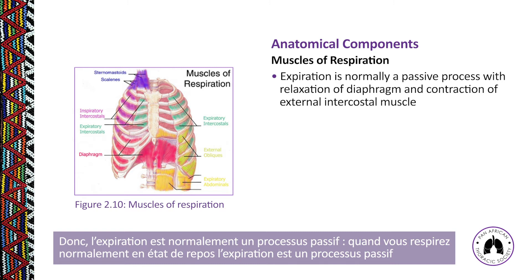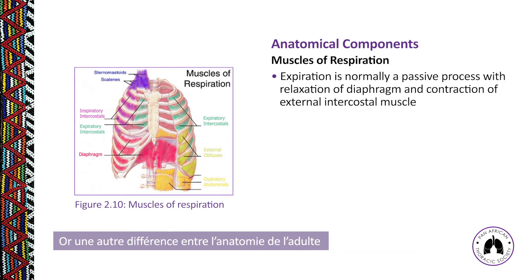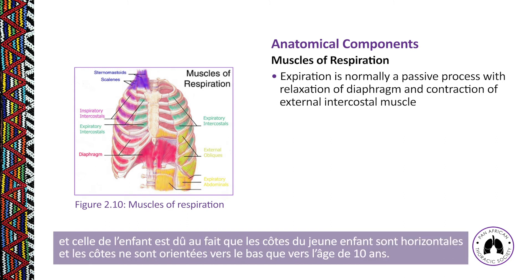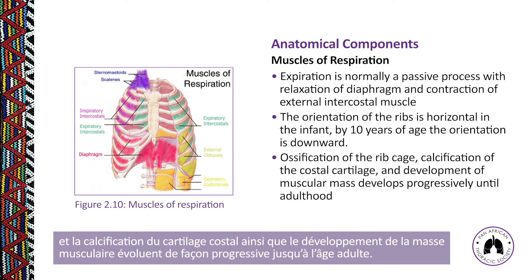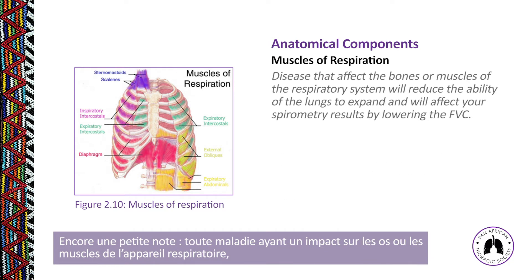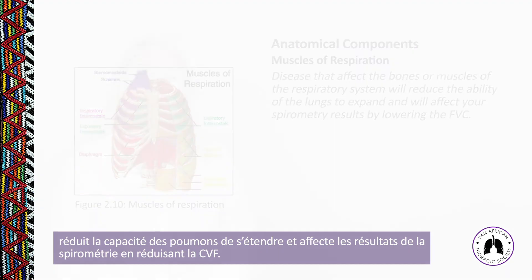Expiration is normally a passive process. When breathing normally at rest, expiration involves the relaxation of the diaphragm and contraction of external intercostal muscles. Another difference in pediatric and adult anatomy is that the orientation of the ribs is horizontal in an infant, whereas by 10 years of age the orientation is downwards. Ossification of the rib cage, calcification of the costal cartilage, and development of muscular mass all develop progressively until adulthood.